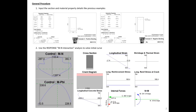Before going to the software, I'm going to walk you through the steps required in this process. The first step is to input the section and material properties. We need to input two different sections: the first for positive bending and the second for negative bending, because our section is not symmetrical about the axis of bending. The second step is to use the Response analysis procedure entitled the MN interaction.